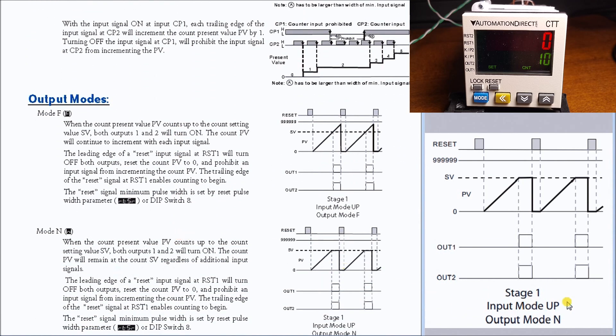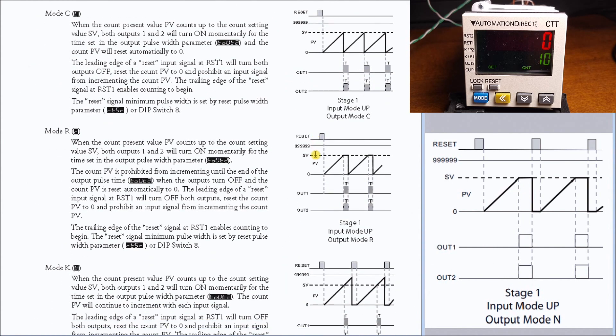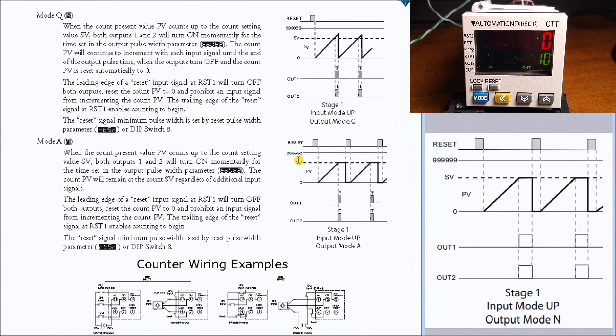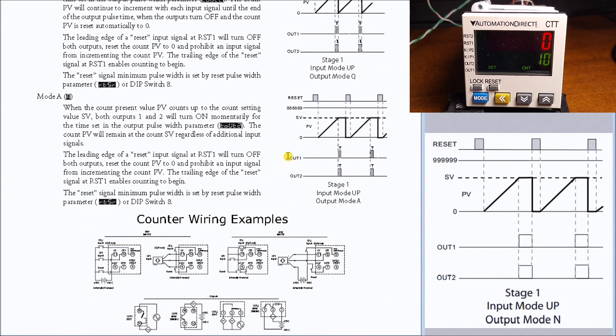In our example here, we're going to be doing output mode N, but we also have F, which basically will tell you what the display is going to be doing. Then we have mode K where we have some one shots that wait till the reset signal. Mode R will automatically reset. Mode P resets after the trailing edge and then on the reset it will reset again.